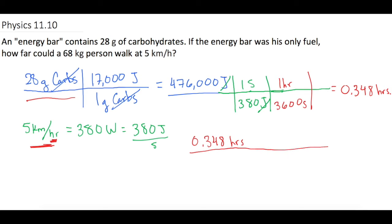Now we're going to use that 5 kilometers per hour to cancel out the hours. So we know that he's going at 5 kilometers for every one hour, and he's walking for 0.348 of an hour.